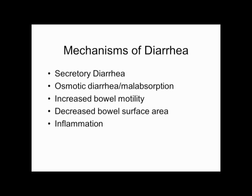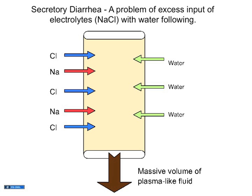There are five mechanisms. First, secretory diarrhea — excess secretion of salts and water. Second, osmotic diarrhea — osmotically active particles in the bowel attract water that can't be absorbed. Third, things move through the bowel too fast with insufficient contact time for absorption. Fourth, decreased surface area means inadequate reabsorption of electrolytes. Fifth, inflammation disrupts many of these systems.